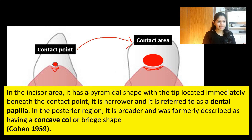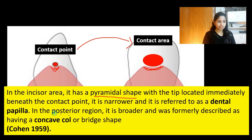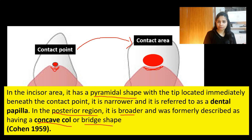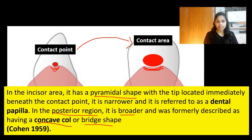In case of posterior teeth, because of the large contact area, the papilla is much broader and forms a col-shaped or concave, tent-shaped structure. To recapitulate: in the incisor region the interdental papilla is pyramidal in shape, and in the posterior region it is broader and forms a concave col or bridge-shaped structure where both the facial and lingual marginal gingiva meet. These terms were first described by Cohen in 1959.